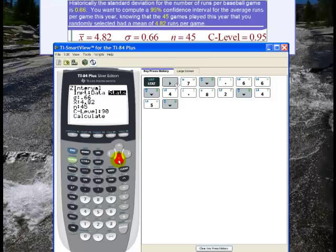And then I go down to C-Level, which is 0.95, and I go down to Calculate and hit ENTER. So there's our confidence interval: 4.6272 to 5.0128.